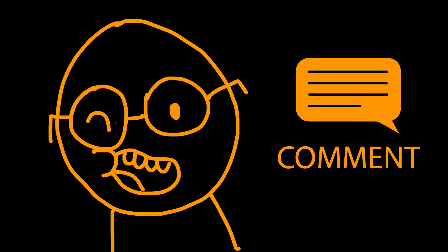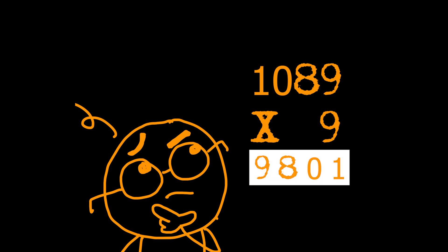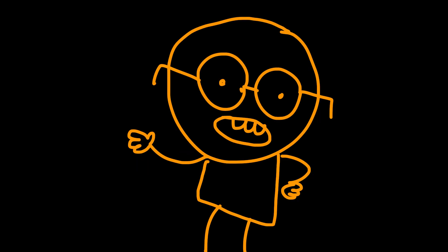Multiply 1,089 by 9. What answer did you get? Did you notice that the answer was 9,801? That's 1,089 turned backwards. Trust me, mathematics isn't actually boring. You've only been lied to.